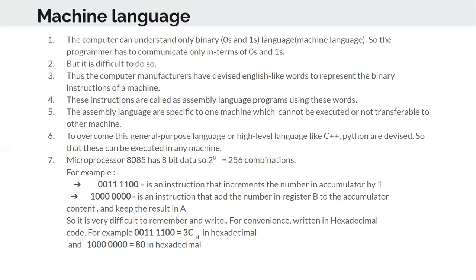An instruction which will work in an Intel microprocessor will not work in a Motorola or a Zilog, because their registers are different and their control unit names are different — everything will be different. So when a user works with a Zilog microprocessor, he must learn the instruction set of that particular microprocessor. In the same way, it goes for others also.